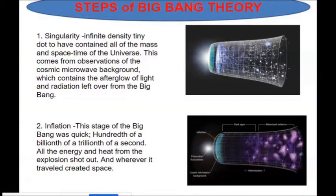We have here the steps of the Big Bang theory, class. First one is the singularity. It means infinity density, a tiny dot, to have a contain, all of the mass and space-time of the universe. This comes from the observation of the cosmic microwave background, which contained the afterglow of the light and radiation left over from the Big Bang. Next one, inflation.